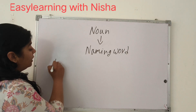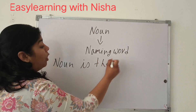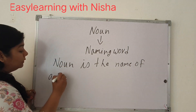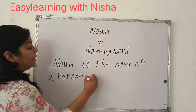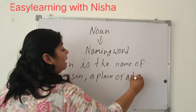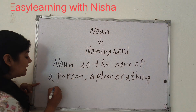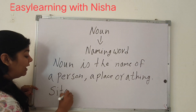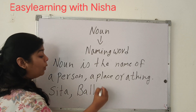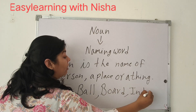A noun is the name of a person, a place, or a thing. For example, Seetha is the name of a person — that is a noun. Ball is a thing — that is a noun. Board is a thing — that is a noun. India is a place — that is a noun.